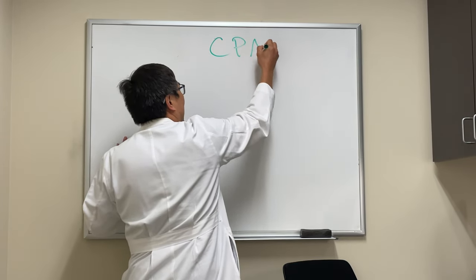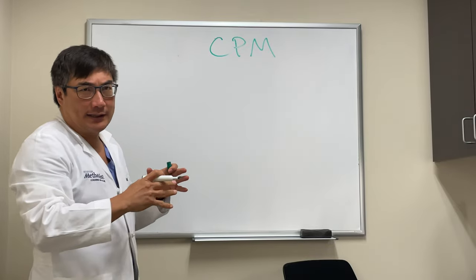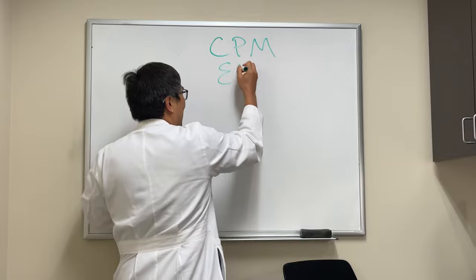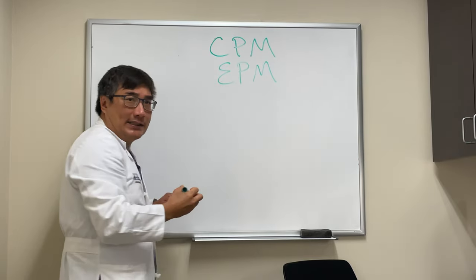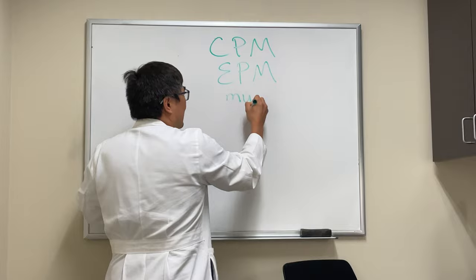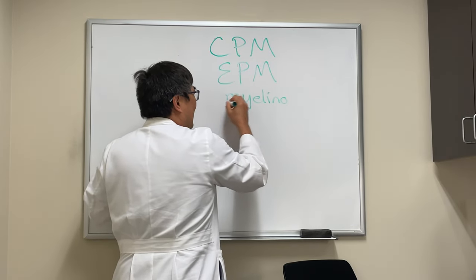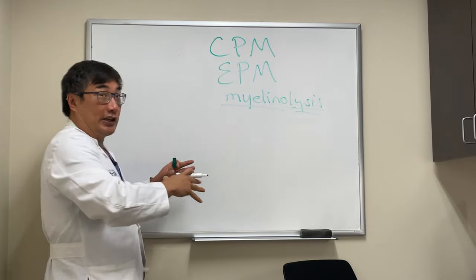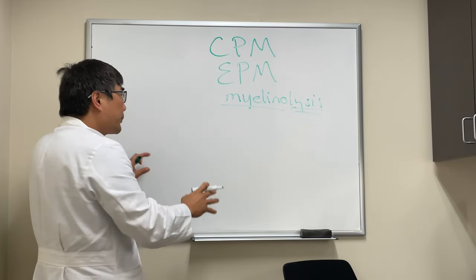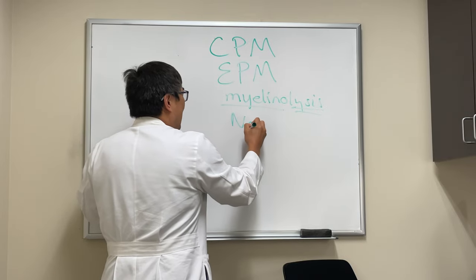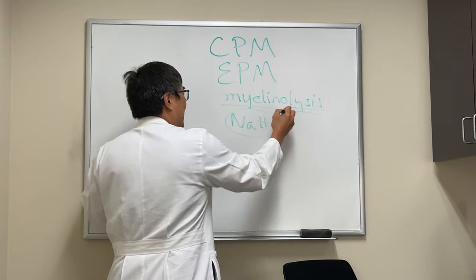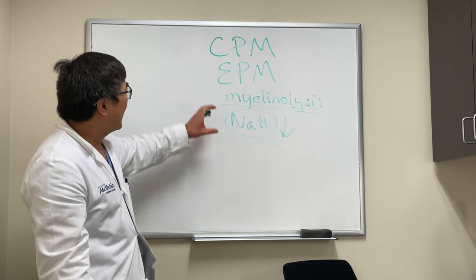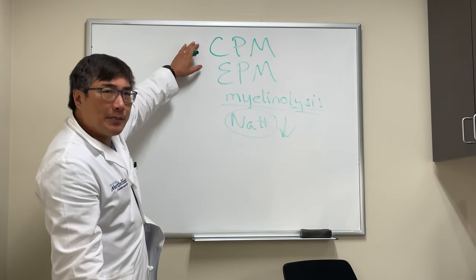I'm going to talk about how central pontine myelinolysis presents in neuro-ophthalmology, and you need to know about its cousin, extra pontine myelinolysis. As it sounds, it's a myelin disorder, but unlike demyelination it's an acute thing - it's lysis of the myelin. The prototype cause is too rapid over-correction of hyponatremia. However, it can occur in other settings, and it doesn't have to be in the pons.